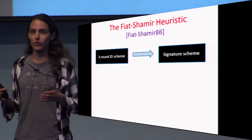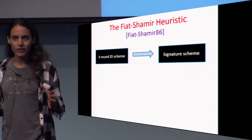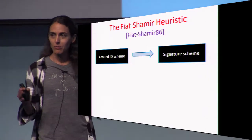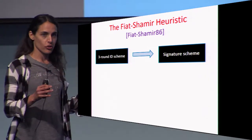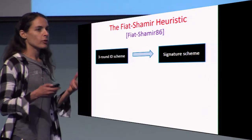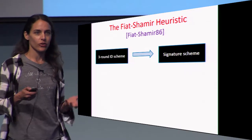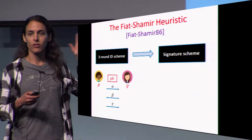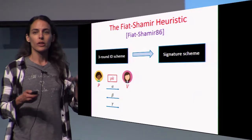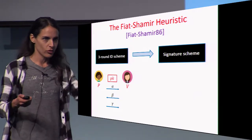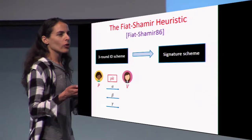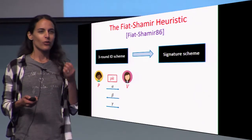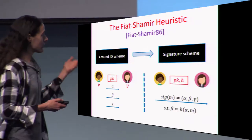The Fiat-Shamir heuristic is a really beautiful and elegant way to convert any three-round ID scheme into a signature scheme. The main difference is that an ID scheme is interactive — it contains three rounds — whereas a signature scheme is non-interactive: you just sign a message. The idea of reducing this interaction is extremely simple and beautiful.